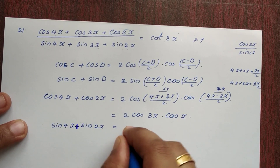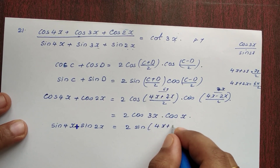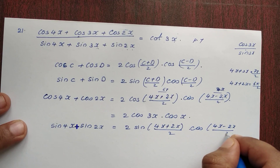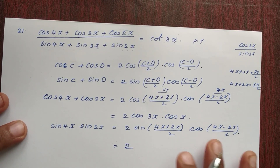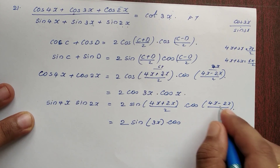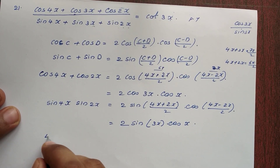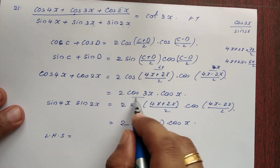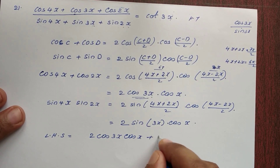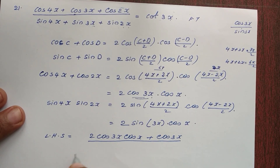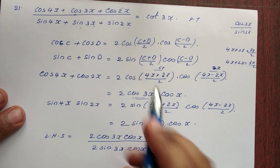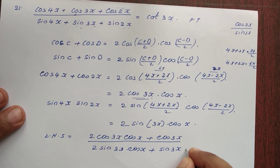For the denominator, sin 4x plus sin 2x equals 2 sin((4x+2x)/2) into cos((4x-2x)/2), which is 2 sin 3x into cos x. Adding sin 3x gives 2 sin 3x cos x plus sin 3x.